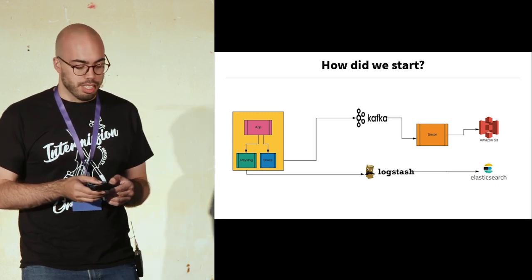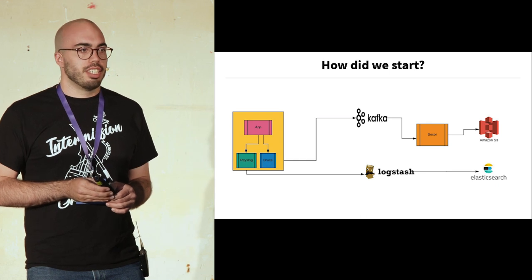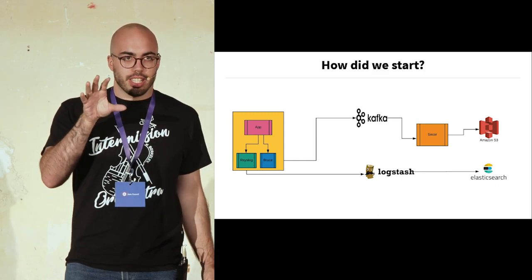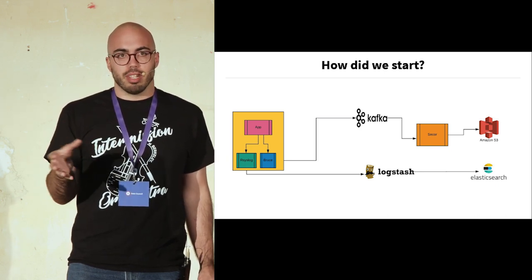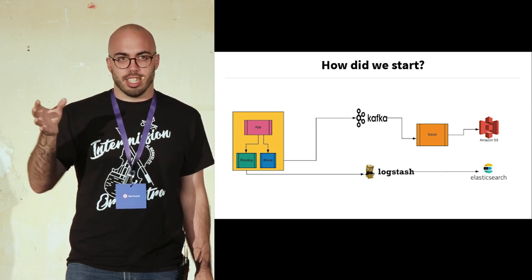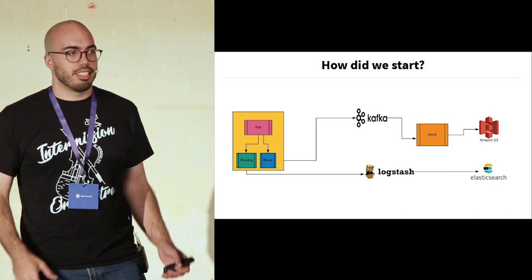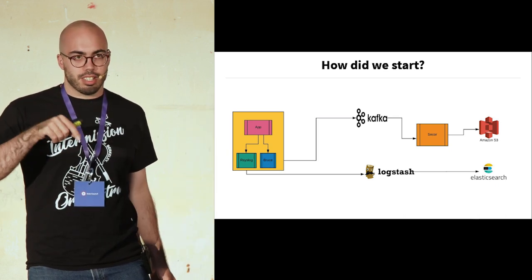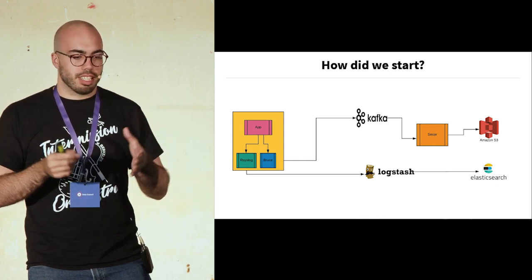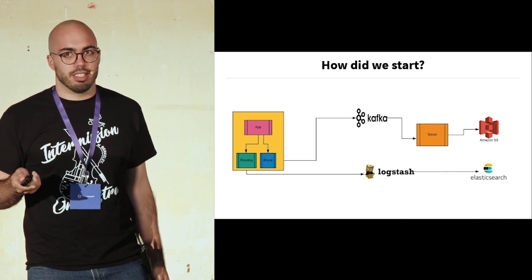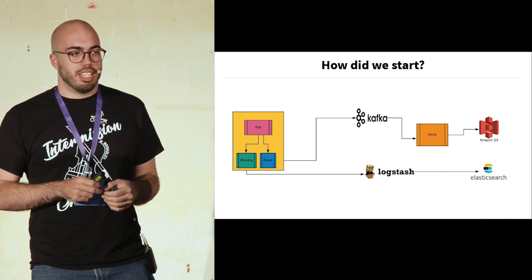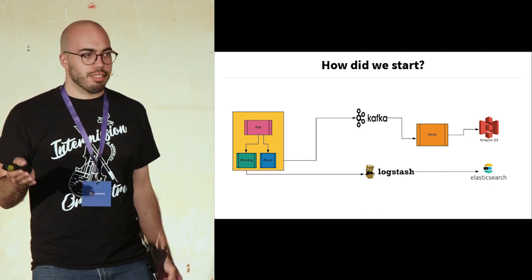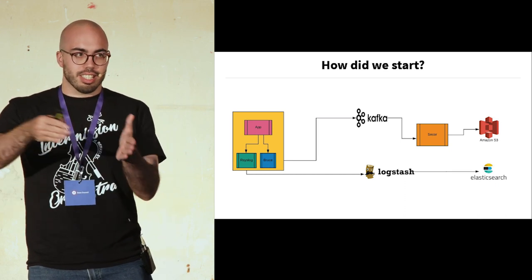Here's where we started with our logging infrastructure. Our application would write to two services — syslog and one called Bruce. Bruce would take data in a binary protocol and write it directly to Kafka. From there, a service called C-Core would take the data, pack it into hourly buckets, and write that to S3, where it's ready for our data warehouse to ingest. We also had to deal with system logs and text logs, which would go through our syslog path. Syslog would write data to our Elasticsearch cluster, parse text logs with regex or grok patterns, format them into a semi-structured document for log search. Occasionally we needed text logs in our data warehouse, so syslog would also write into Kafka, through C-Core, and into S3.